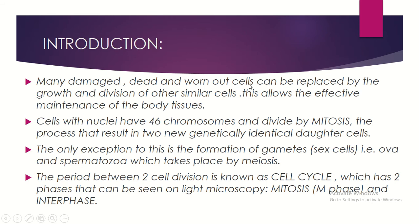Many damaged, dead, and worn out cells can be replaced by the growth and division of other similar cells. This allows effective maintenance of the body tissues. For the body to work properly, the cell is the main important thing. If a cell is damaged, dead, or worn out, it should be replaced by a new cell — for example, if a muscle cell is damaged, the same type of muscle cell grows, divides, and replaces it.